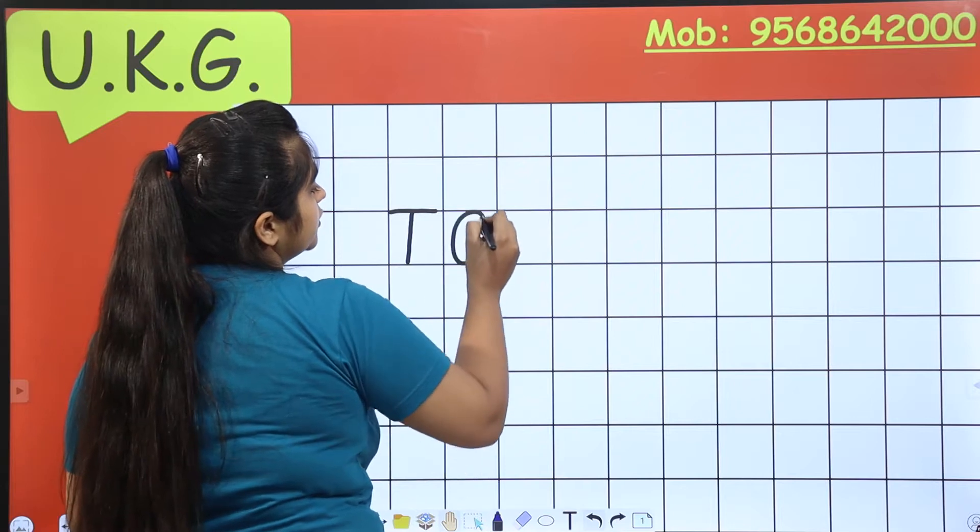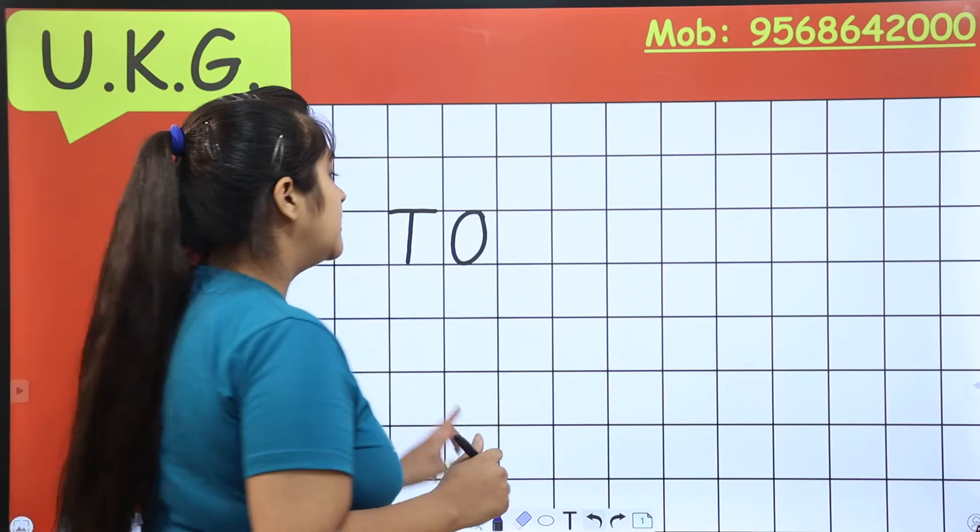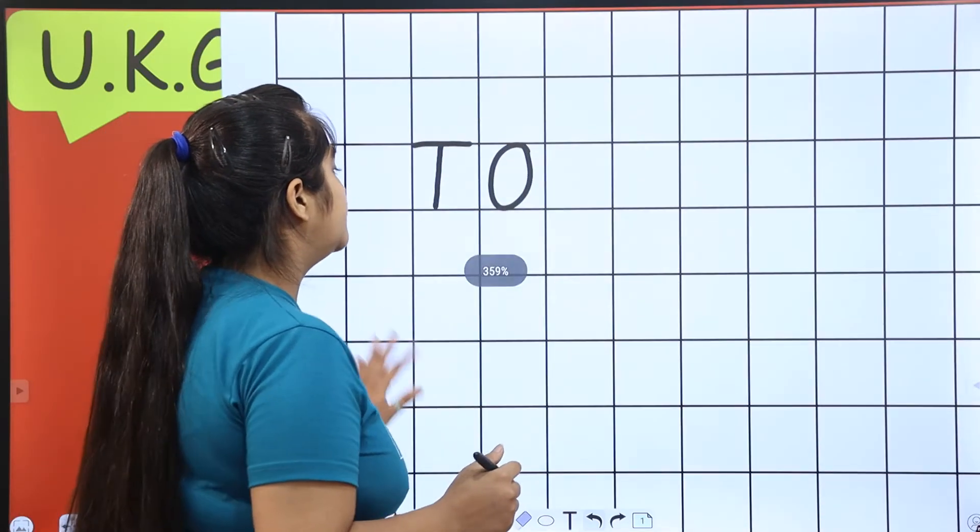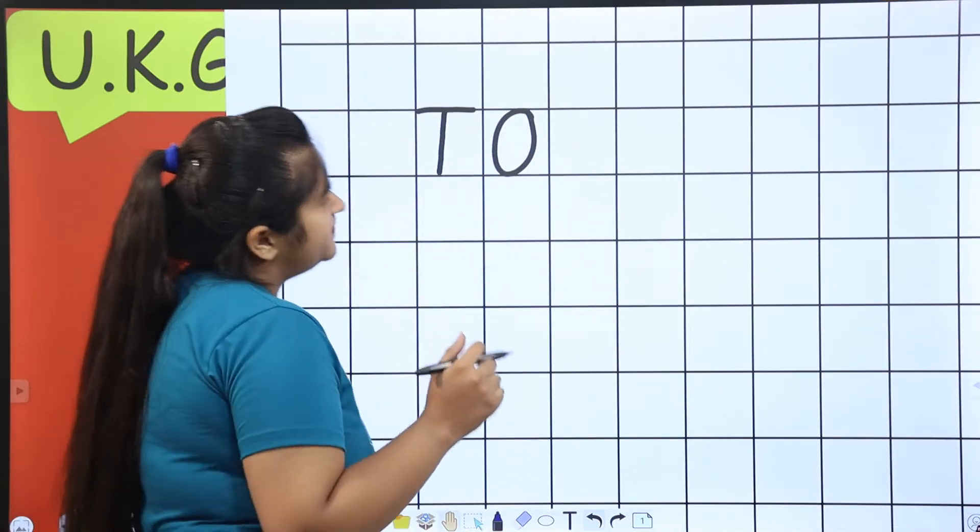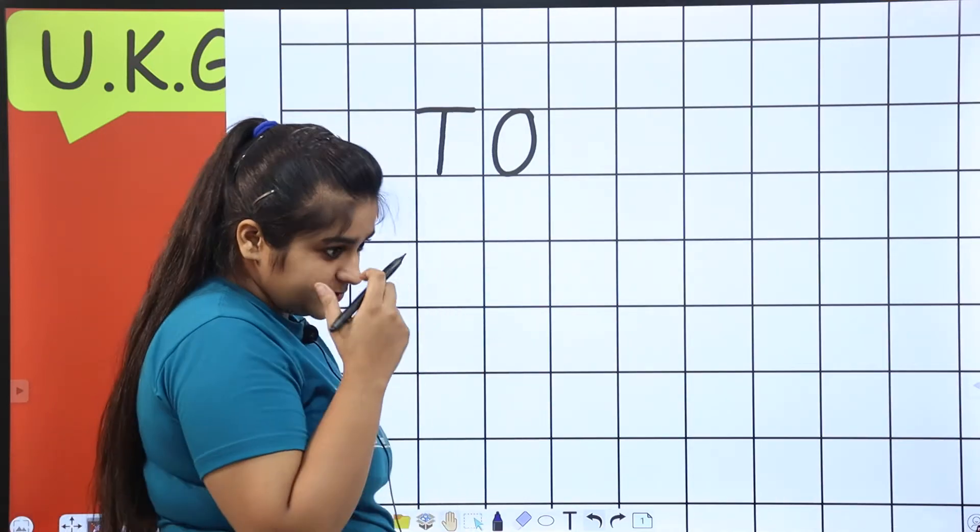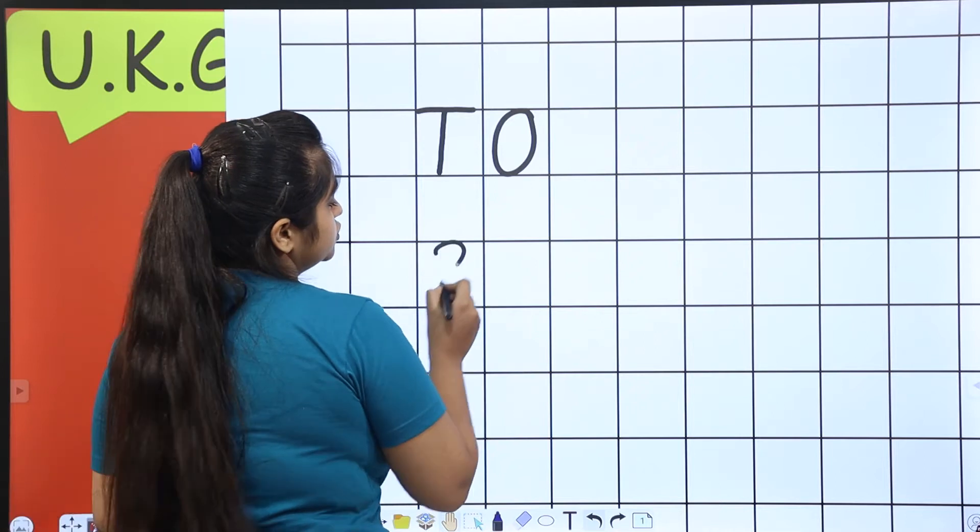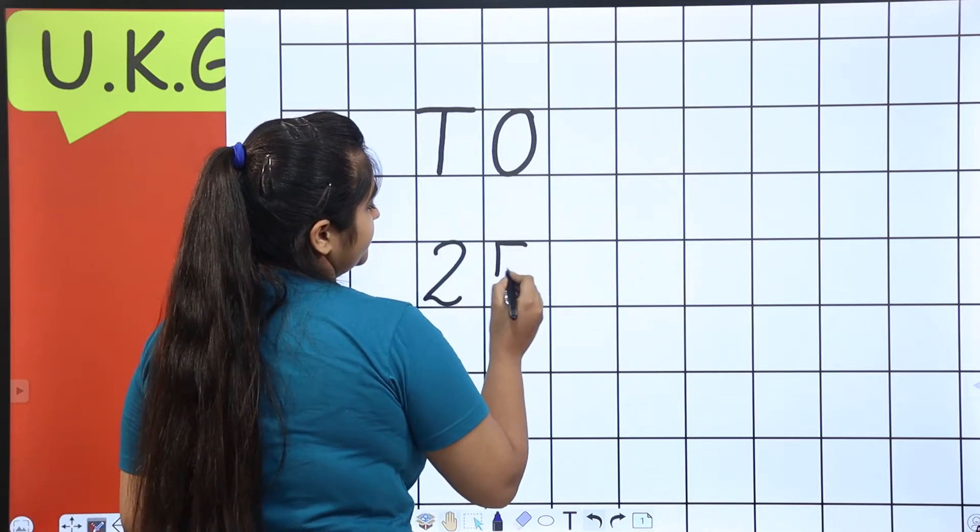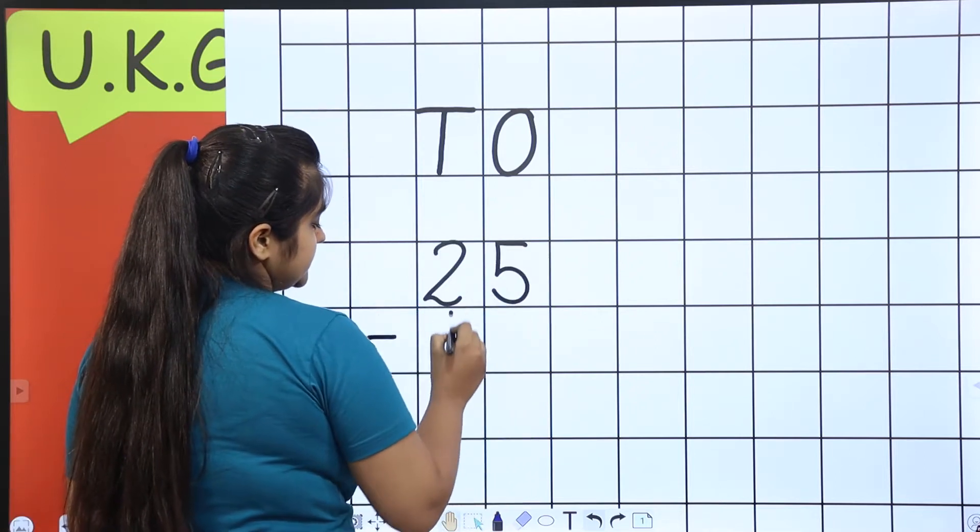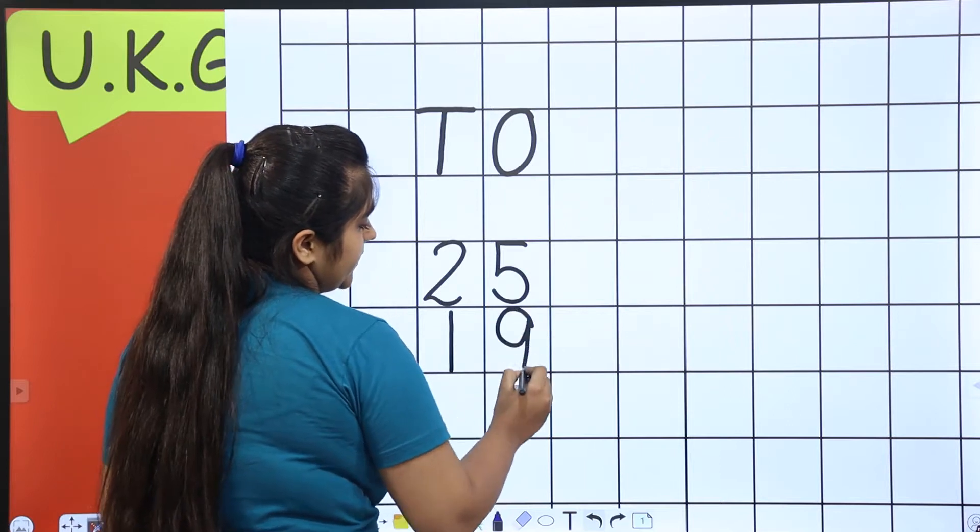First of all, we will mention T O. Okay, we have mentioned it. Now we will write the sum. 25 minus 19.